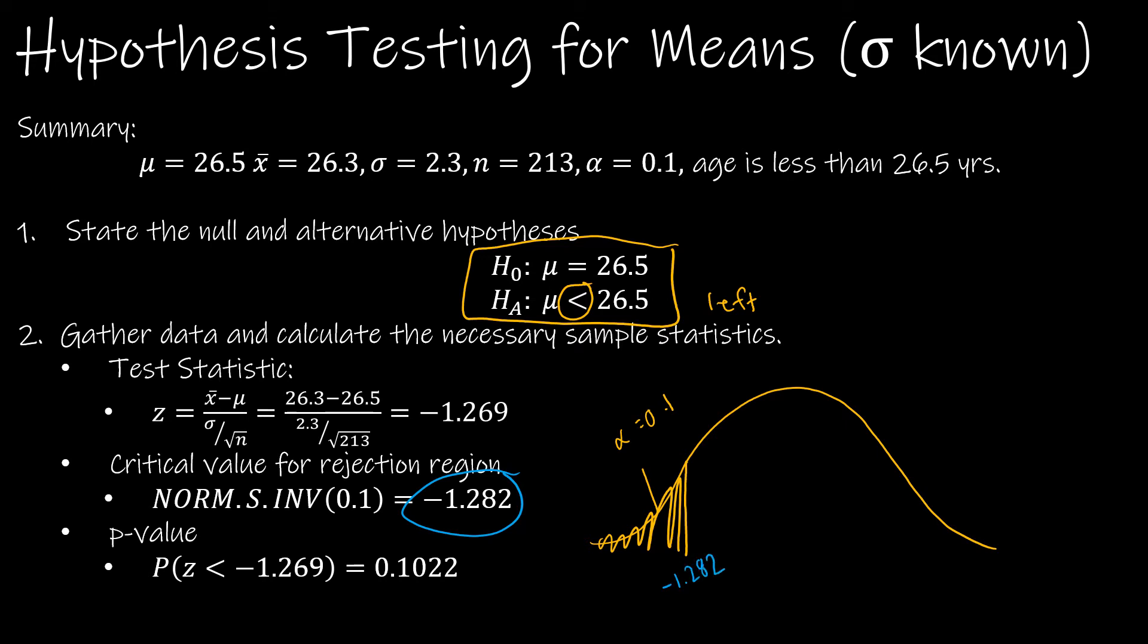And then the p-value—I think I skipped the test statistic, so let's go back to that. This is just the same z-score formula we used before. Use a calculator or Excel. Excel's super easy. Just make sure you're getting those parentheses in the right place. Parentheses on the top, parentheses on the bottom when you're plugging it into a calculator. And you get a test statistic of negative 1.269.